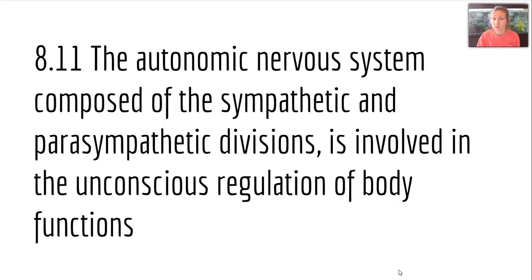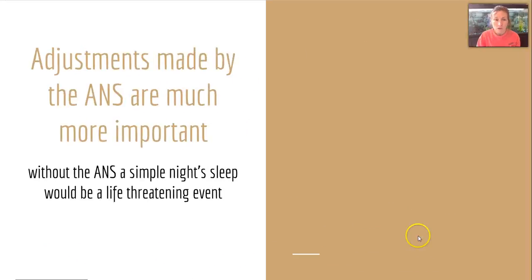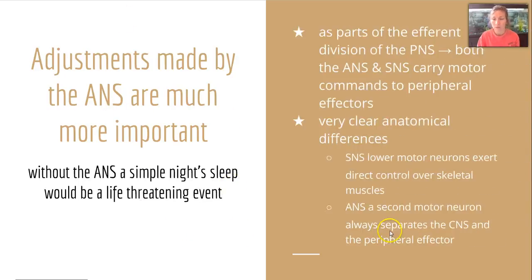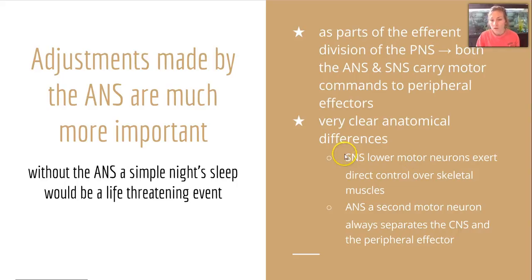Section 8-11: the autonomic nervous system is composed of the sympathetic and parasympathetic divisions. It's involved in the unconscious regulation of body functions, which is actually more important than many conscious thoughts — without the ANS, a simple night's sleep would be a life-threatening event. Remember that the PNS is divided into efferent and afferent divisions; we're focusing on the efferent division, which includes both the ANS and the somatic nervous system. Both carry motor commands to peripheral effectors, but with clear anatomical differences.